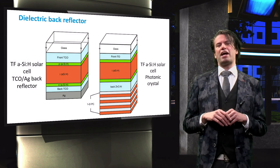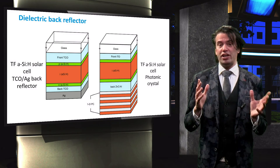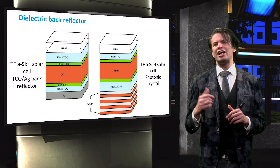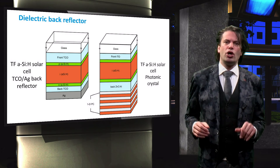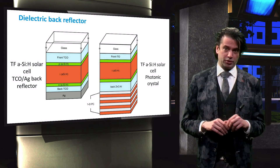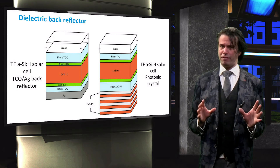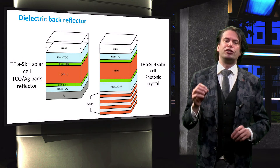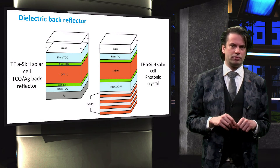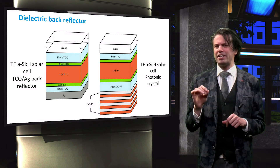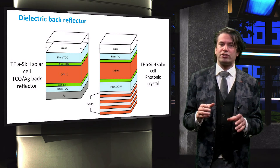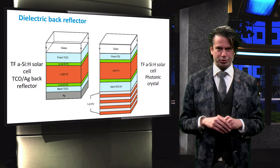A dielectric backreflector can replace a conventional metallic backreflector. The shown figures illustrate solar cells with these two different types of backreflectors. The advantage of a dielectric backreflector lies in its use of cheap silicon alloys instead of expensive metals. It also has the advantage that its properties can be tuned to effectively reflect a certain spectral range.